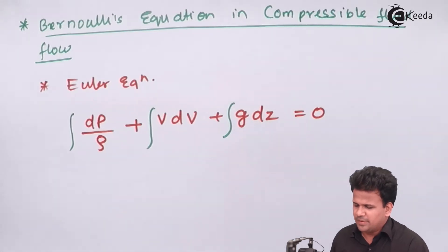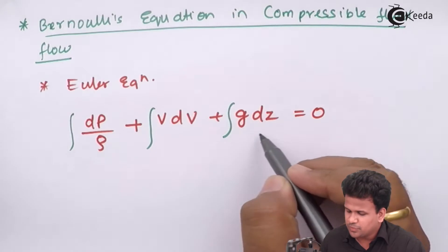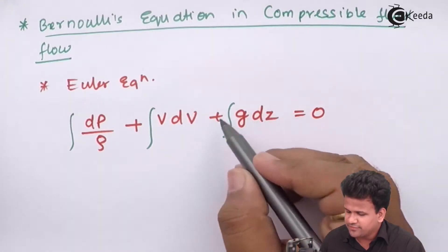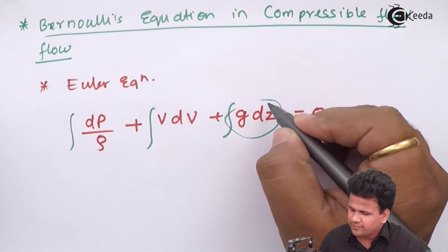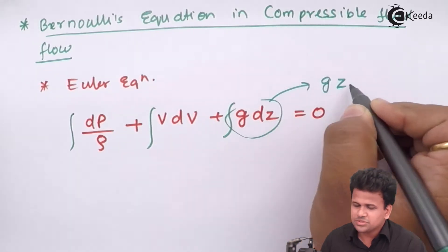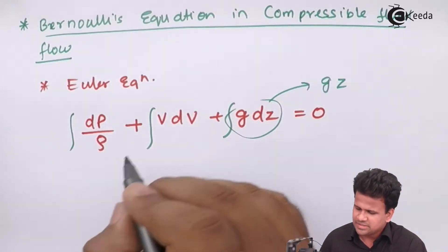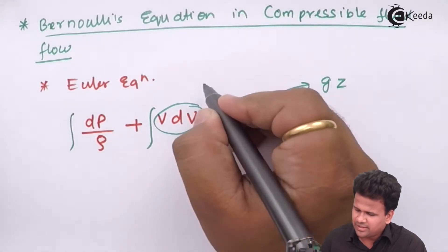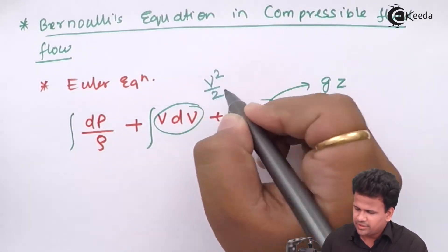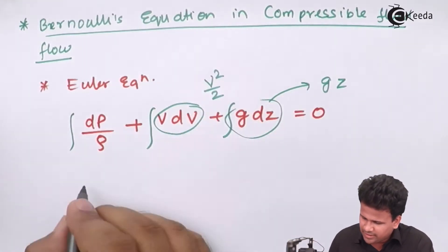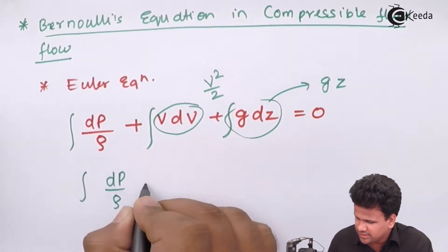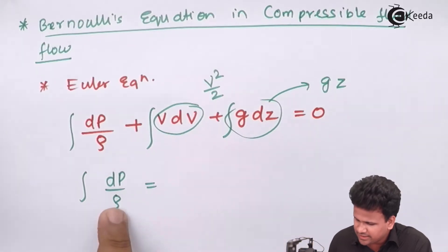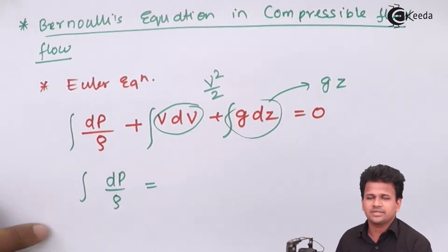Since this is a compressible fluid flow, the potential energy term integrates to g·z and the kinetic term integrates to V²/2. However, for the integral of dp/ρ — the change in pressure with respect to density — we cannot take density outside the integral sign.